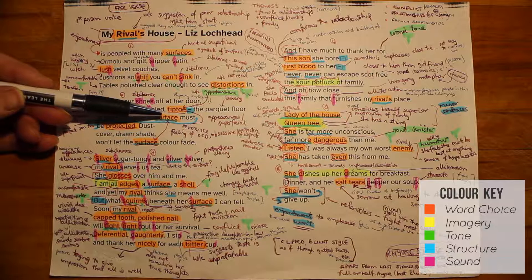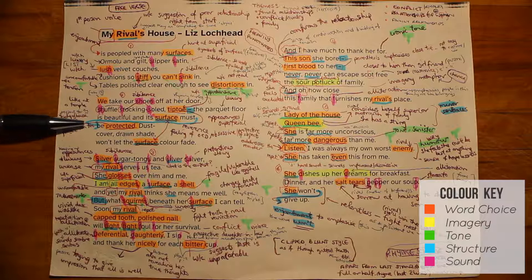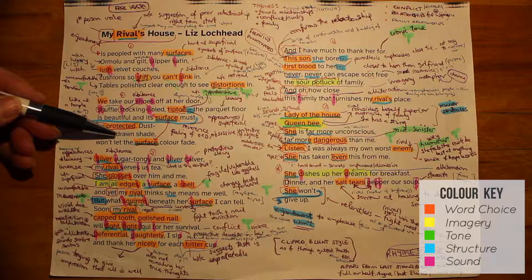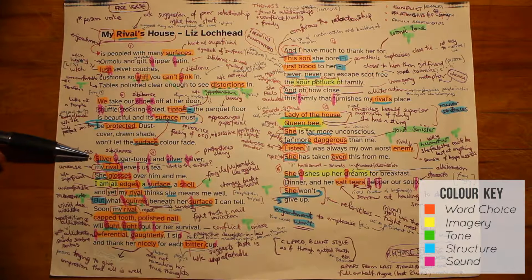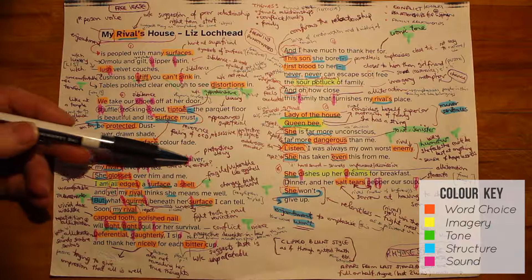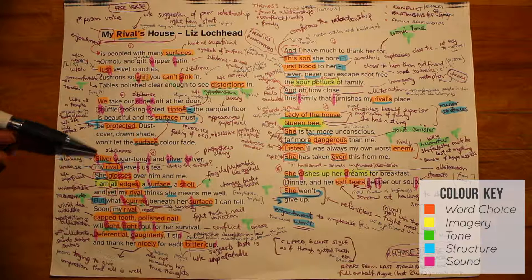Everything has to look good, but who knows what's underneath. Everything also has to be protected, and this makes us think that if the hostess has to protect all the objects in her house, what will she do when it comes to protecting her son? This hints at the rivalry between the two women. The reference to dust cover and drawn shade shows the lengths to which this woman will go to protect things, and the word shade suggests darkness — she is obsessive in her wish to protect. Stanza three opens with sibilance: silver sugar tongs and silver salver. The repetition of silver hints at the pretentiousness of the hostess, and the sibilance creates a slightly sinister tone.